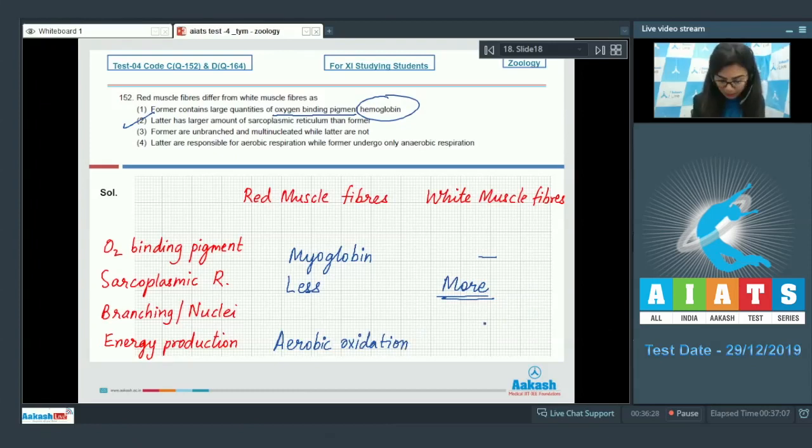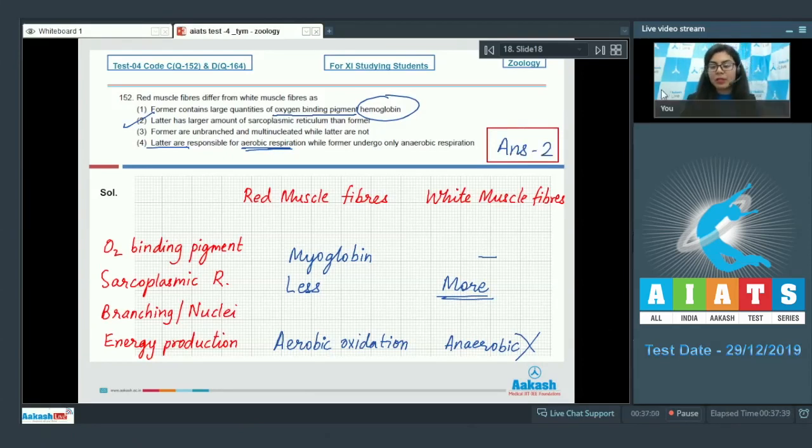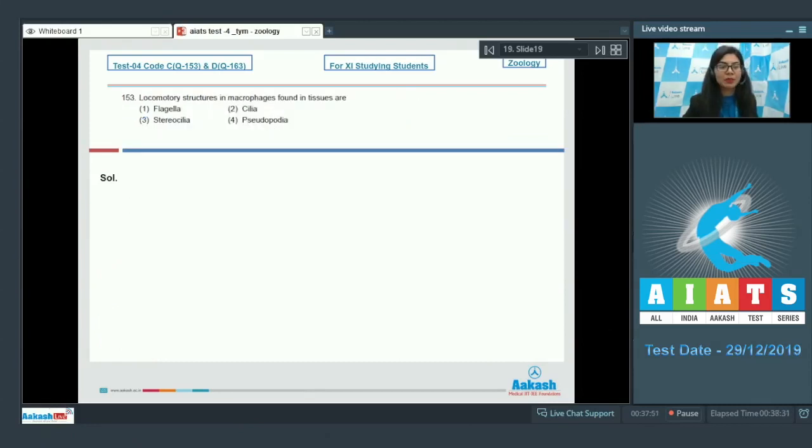Whereas white muscle fibers carry out anaerobic oxidation. Option number four is saying that the latter are carrying out aerobic, which is incorrect. So the right answer here would be option number two, which gives the correct differentiation between red muscle fiber and white muscle fibers.